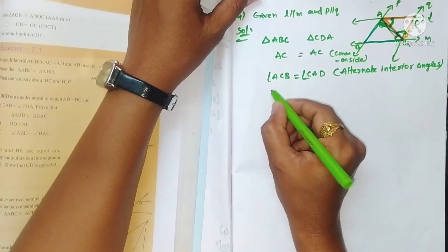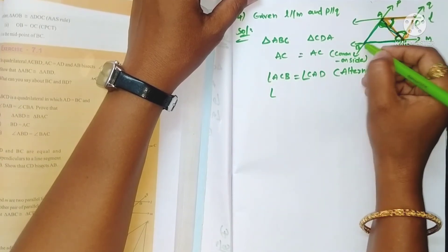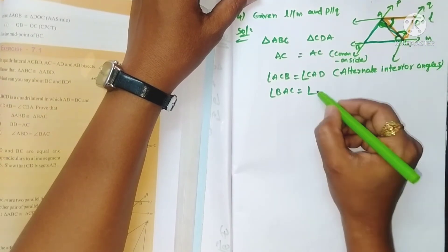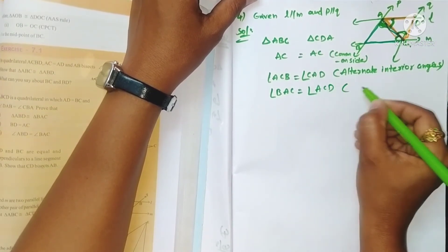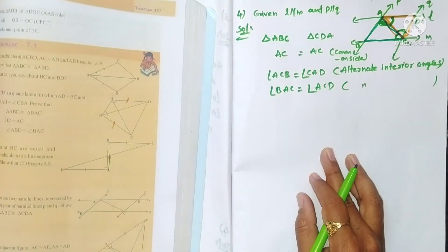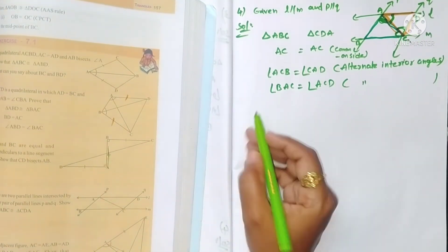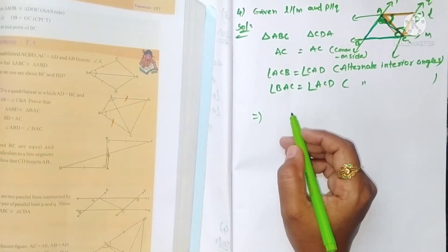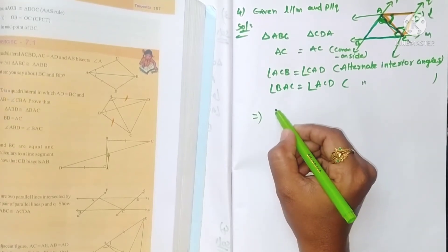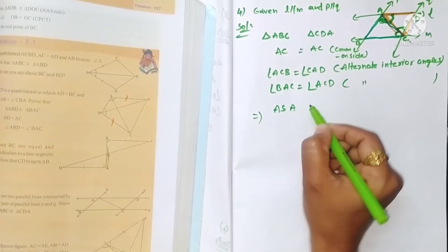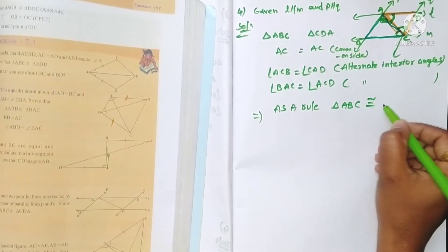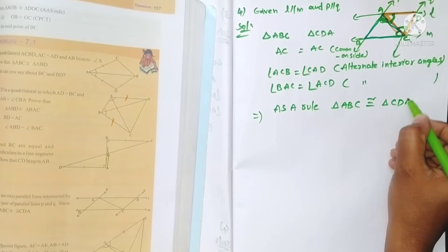We have two angles and one included side equal. So by the Angle-Side-Angle rule, the two triangles are congruent: triangle ABC is congruent to triangle CDA.